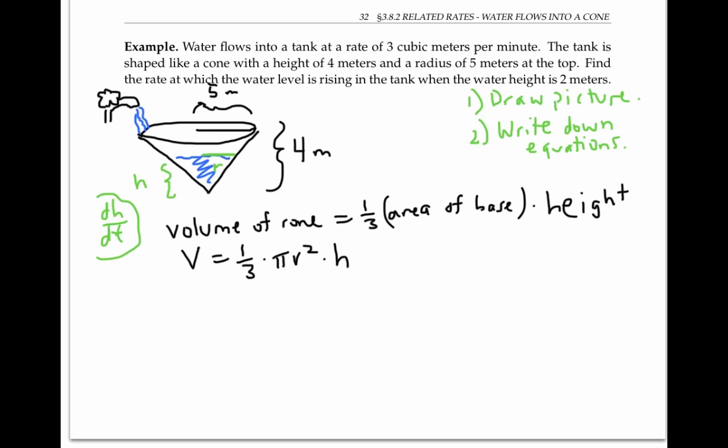There's one more equation that's going to be handy here that comes from similar triangles. From similar triangles, we know that the ratio of sides for the little triangle here is the same as the ratio of sides for the big triangle. In other words, we know that r over h is going to be equal to 5 over 4. I can use this relationship to eliminate one of the variables in this equation.